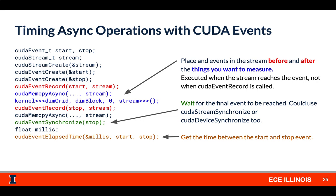You can then ask CUDA how much time elapsed between those two events once the second event has happened. In this case, we'd be measuring how much time elapses between the start of the memcopy and the end of the kernel execution. To ensure the stop event has happened, we call CUDA event synchronize — which, instead of waiting for the whole device to finish, just waits for that specific event. Then we use CUDA event elapsed time to get the number of milliseconds as a float that elapsed between the start and stop events. This is the most flexible and accurate way to measure the performance of specific CUDA operations.